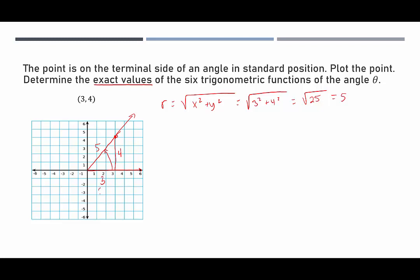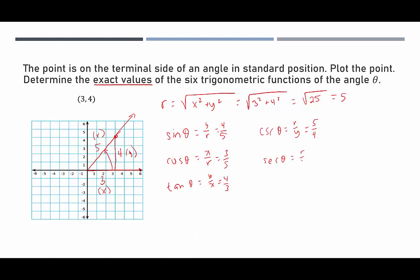With x = 3, y = 4, r = 5: sine of theta is y over r = 4/5; cosine of theta is x over r = 3/5; tangent of theta is y over x = 4/3. All are positive since the terminal side is in quadrant one. The reciprocals: cosecant is r over y = 5/4; secant is r over x = 5/3; cotangent is x over y = 3/4.